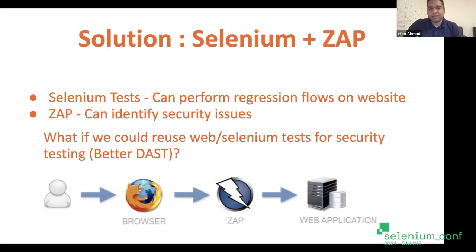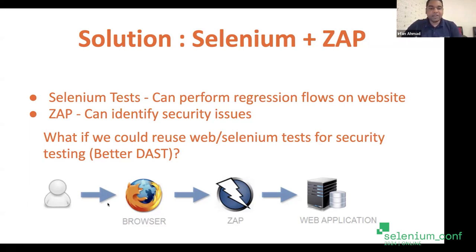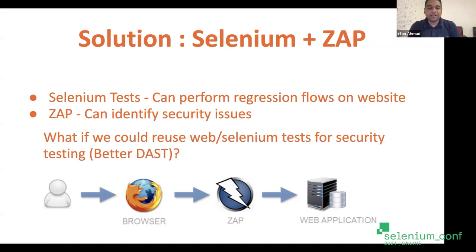The approach is simple: the Selenium tests, whatever we have, we keep as is - they can perform regression flows on the website with no changes needed to your Selenium scripts. For ZAP, we just need to integrate it using the libraries it provides. The flow is that whatever requests your Selenium client is making through the browser, ZAP comes in between as a proxy. It listens to all the interactions, goes through all the network. Then it does the same activity - it identifies issues. We can do it in two phases: passive mode, or attack mode which checks every page that we go through in Selenium.